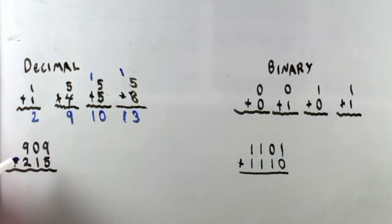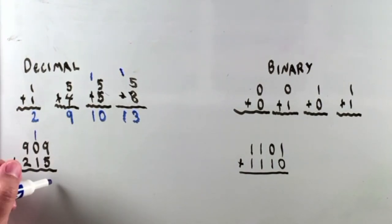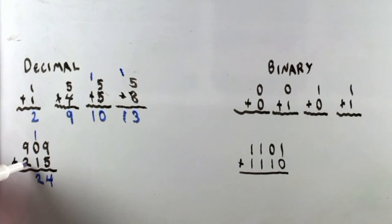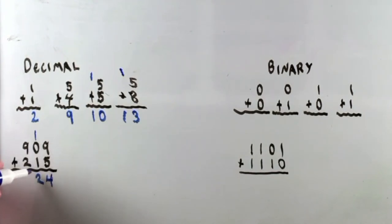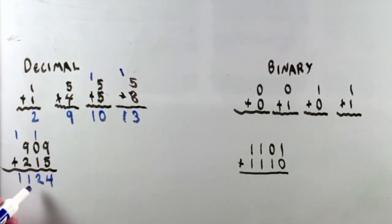Let's take a more elaborate example: 909 plus 215. Nine plus five is 14 — we carry 10 out of that, leaving four behind. One plus zero plus the carried one is two. Nine plus two is 11 — we carry 10, leaving one more, and that carry drops down. So we end up with 1,124.